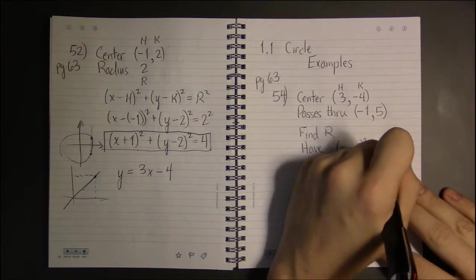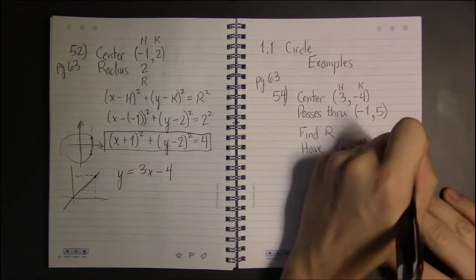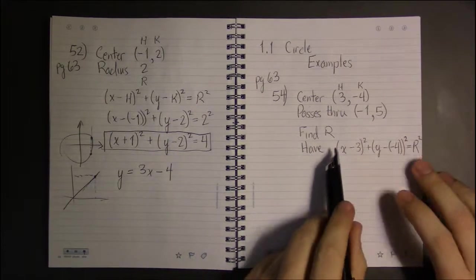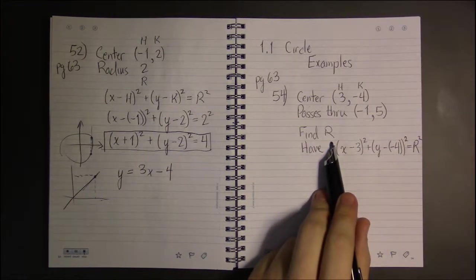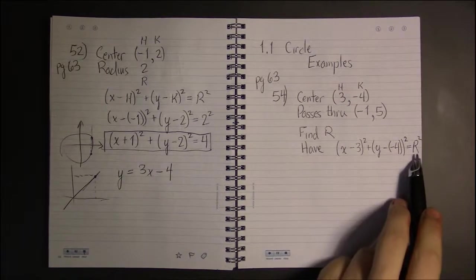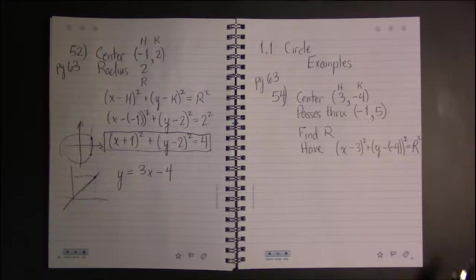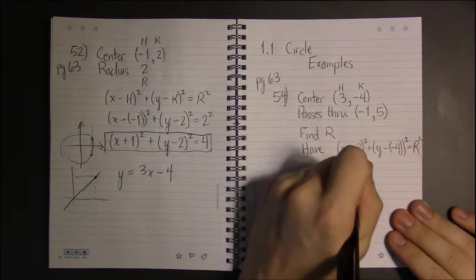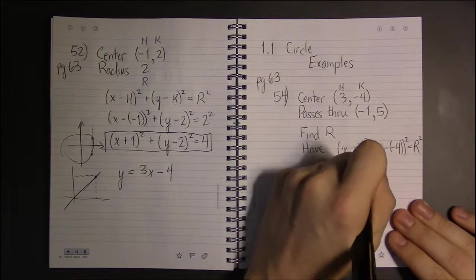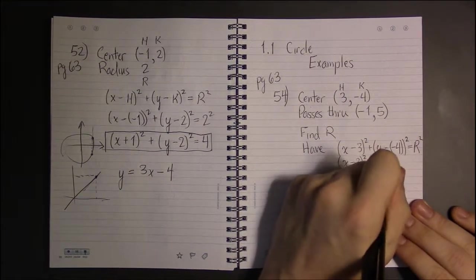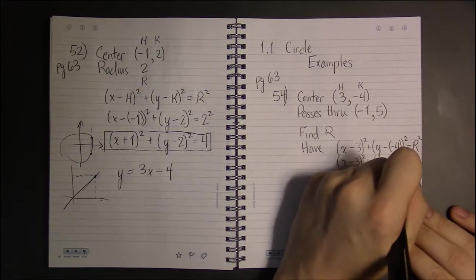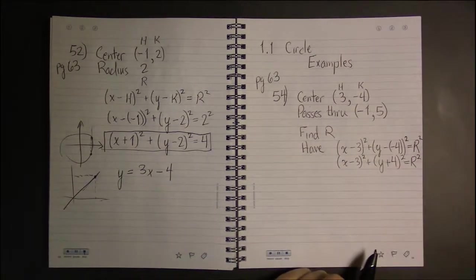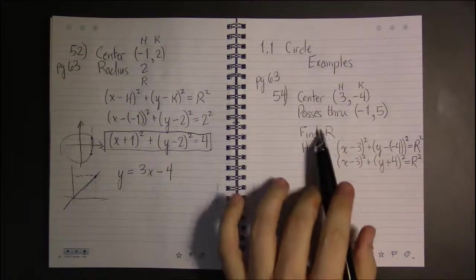Well, we can do a little simplification because minus a minus four is simply plus four. Now, by passing through, it tells us that if we plug in minus one for X and five for Y, this equation should be true.